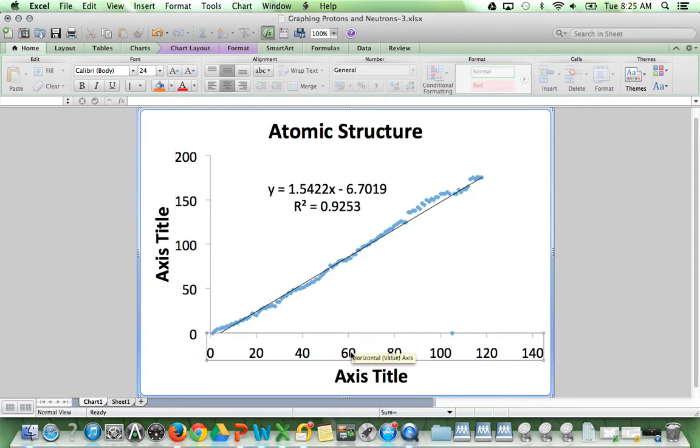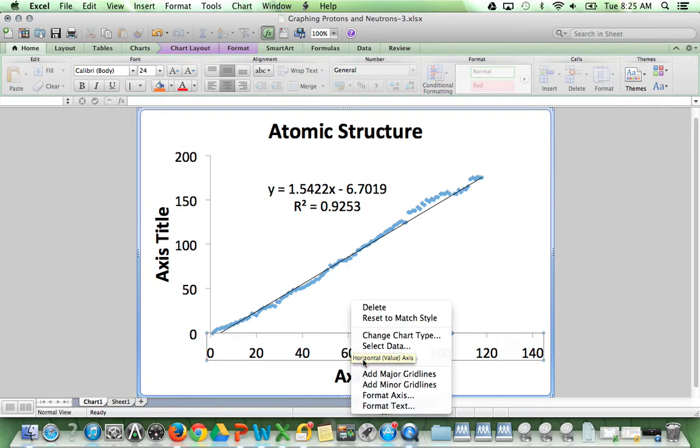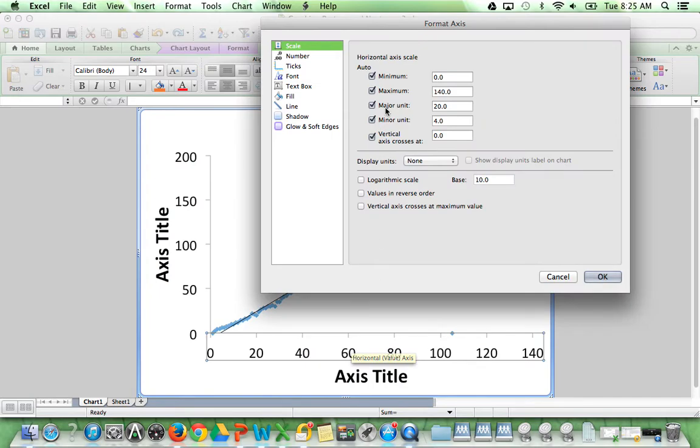We're going to do the same thing here on the x-axis. Select, two-finger click, format axis. We're going to change our maximum to 120 this time. And our major unit is going to be upgraded to 40. You can see that changes the number of values shown.